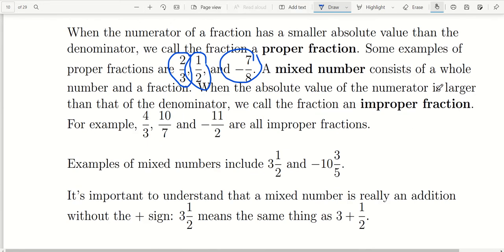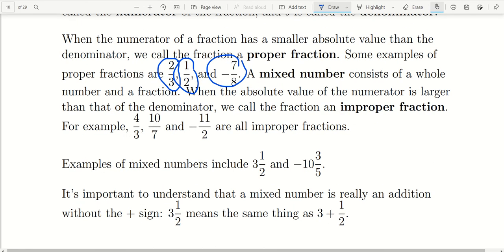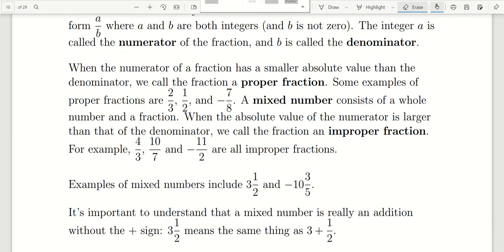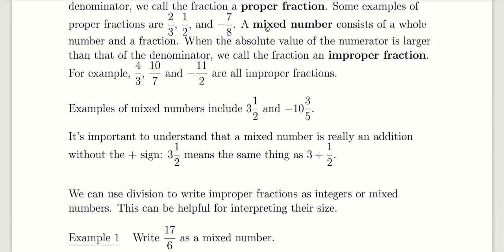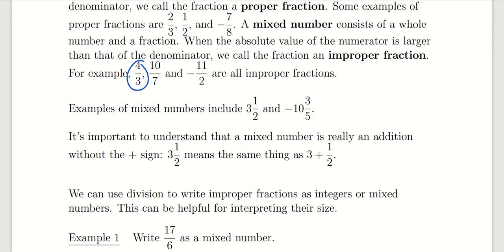If the numerator is equal to or greater than the denominator, then we say that the fraction is improper. So if the numerator is equal to or greater than the denominator, things like 4 thirds, 10 over 7, and negative 11 over 2 would be examples of what we call improper fractions, because the numerator is larger than the denominator.